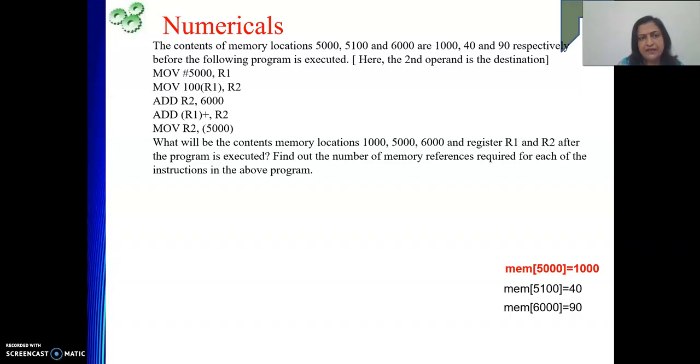So move #5000, R1. Meaning is, immediate data 5000 will be moved to R1. So where is 5000? Part of instruction. Already instruction is in IR. Where is R1? R1 is also in processor register. So to execute this instruction, how many memory references do we need? Only one. That one is for fetching the instruction from memory. After that everything will be with us. We will just perform the operation. That means R1 will be loaded with 5000.